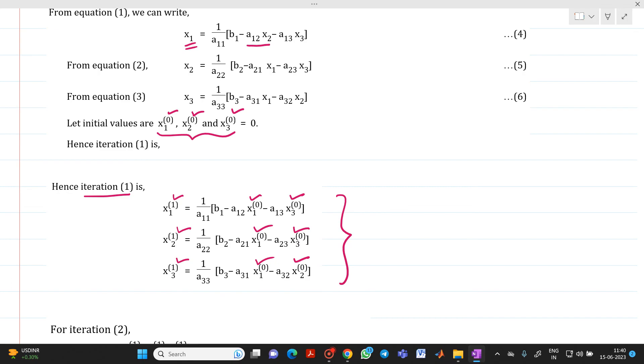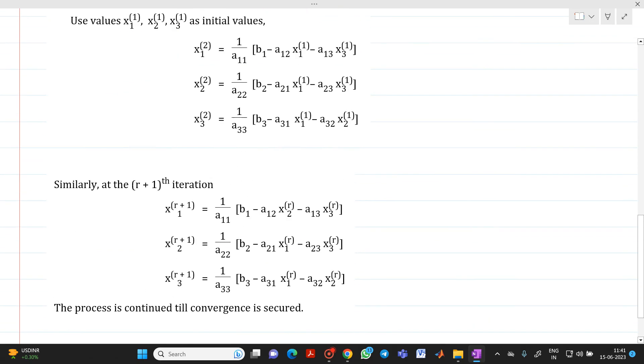This gives you the formula for the Gauss-Jacobi method. If you want to find the next iteration, for iteration number 2, whatever answers you will get—x1 of 1, x2 of 1, and x3 of 1—you have to use as the initial approximation for iteration number 2. Please remember, on the right-hand side of each equation, we have put x1 of 0, x2 of 0, x3 of 0, which is equal to 0.